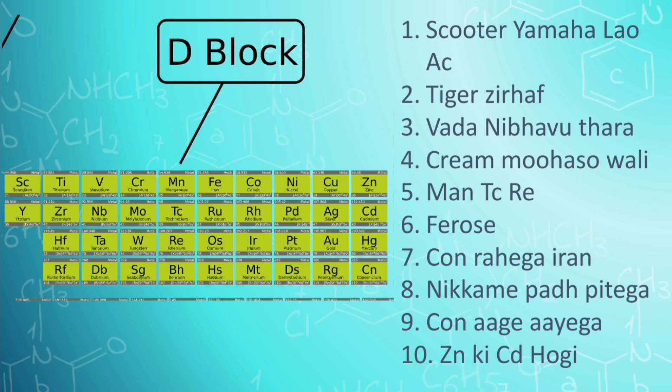Then manganese technetium and rhenium, memorized trick for it is man tc re. Then iron ruthenium and osmium, and trick for it is feroz. Then cobalt rhodium iridium, and memorized trick for it is con rahega iran. Then nickel palladium and platinum, and memorized trick for it is nikkame padh pitega. Then copper silver and gold, and memorized trick for it is con aage aayega.